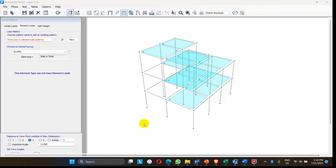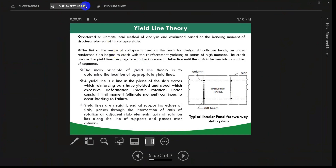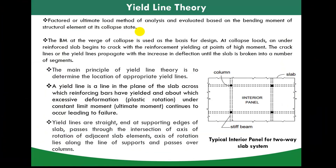Load distribution from the slab is based on yield line theory, which is also used for slab design. In yield line theory — also called yield line analysis — the design is based on the bending moment of the structural element at its collapse state. At collapse load, an under-reinforced slab begins to crack with reinforcement yielding at points of maximum moment — either positive bending moment at mid-span or negative bending moment at the support zone. The cracks or yield lines propagate with increasing deflection until the slab breaks into segments. The main principle of yield line theory is to determine the location of appropriate yield lines.